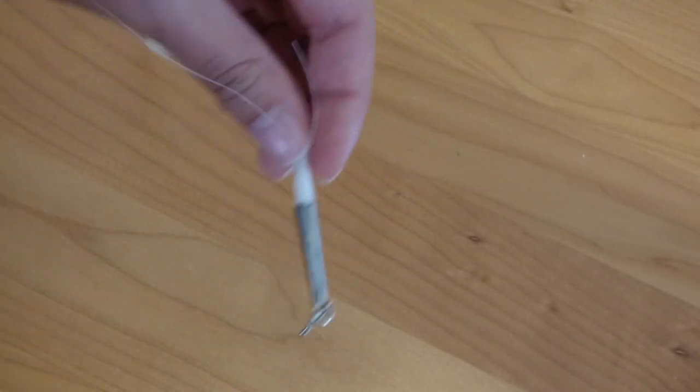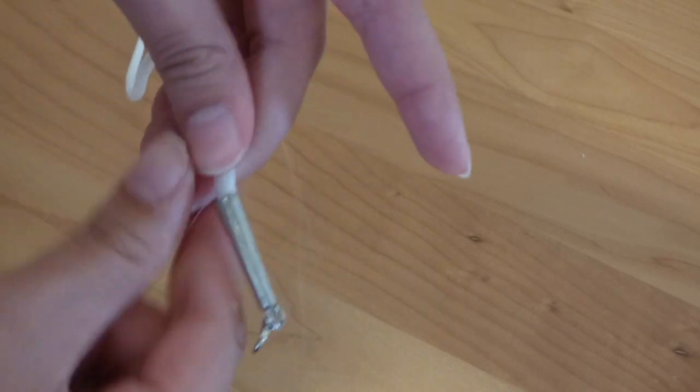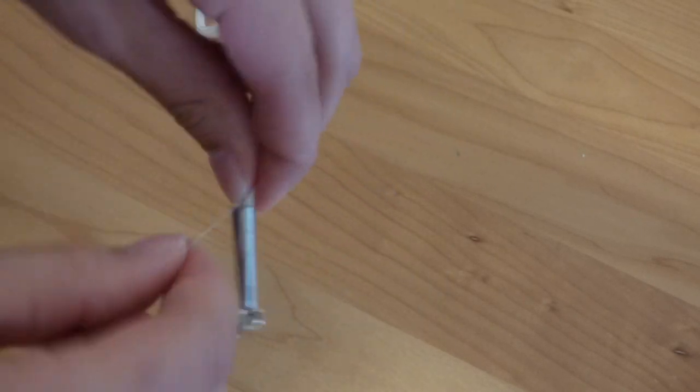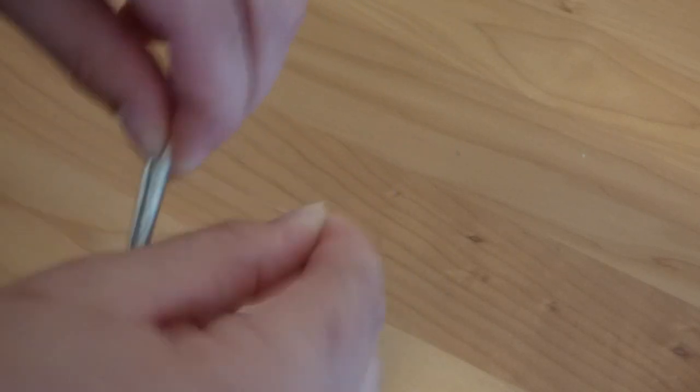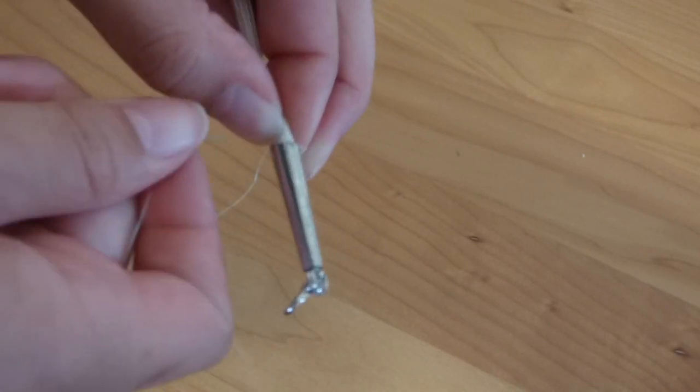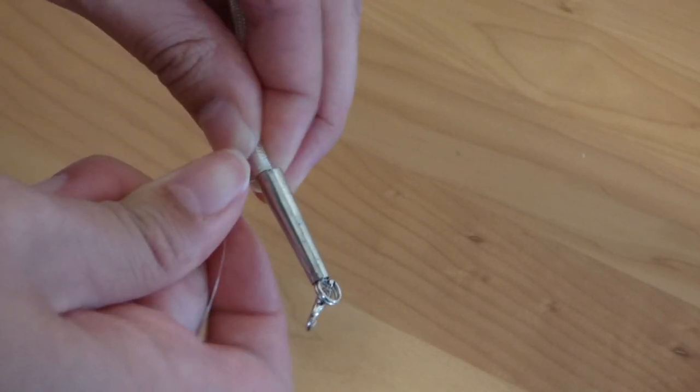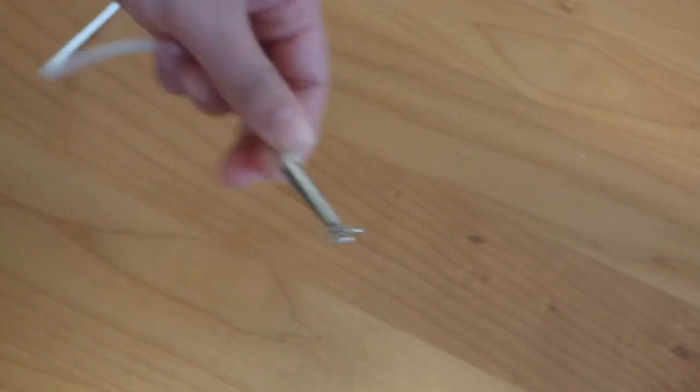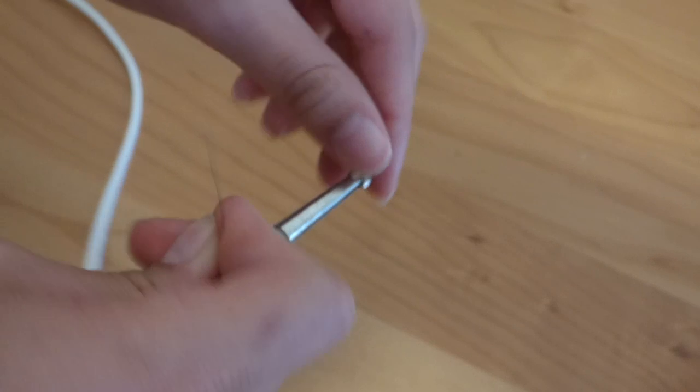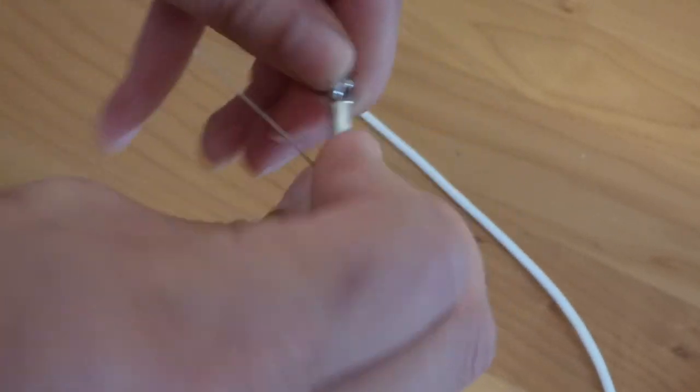Once you've done that, you're going to wrap three times at the base of the cone, then stick the needle through again. And that is how you apply one end.